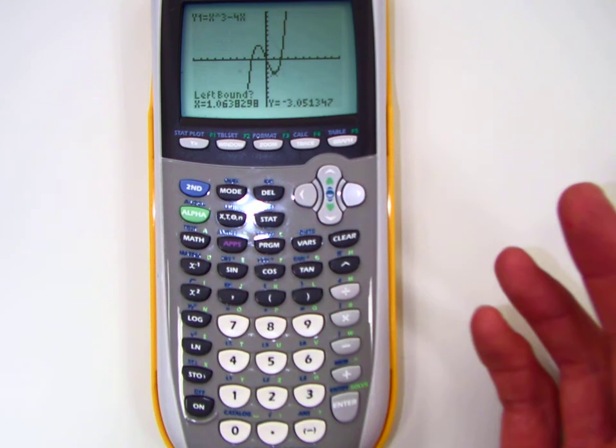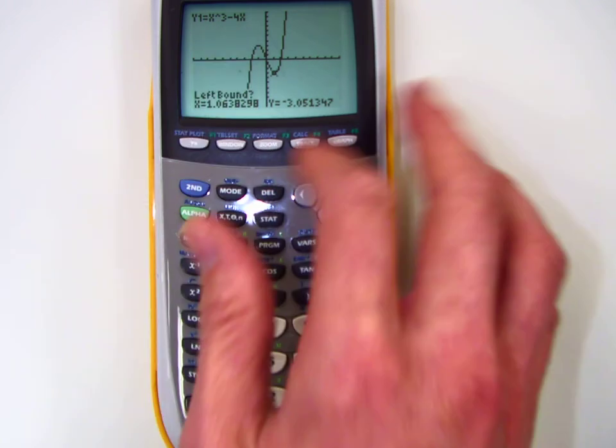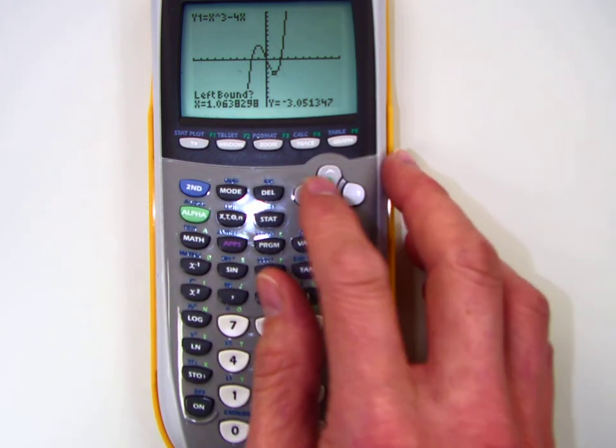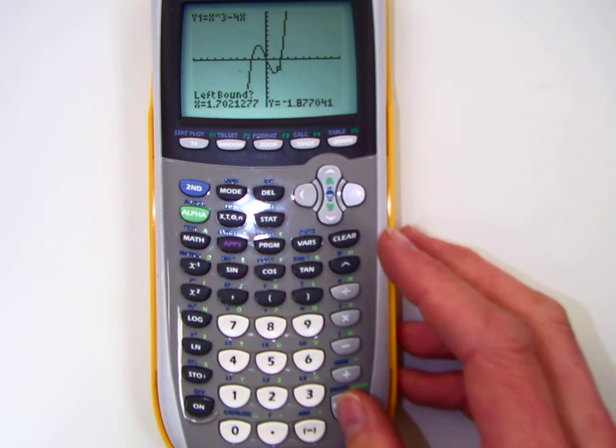So we go back over here. Let's say I want my zeros, which is pretty important if you're setting this equation equal to zero. Any equation, if you can get it to be equal to zero, you can solve it. So what you do is, to find zeros, you want to find out where it crosses the x-axis.